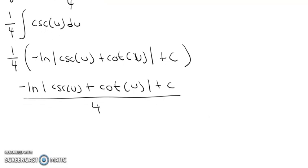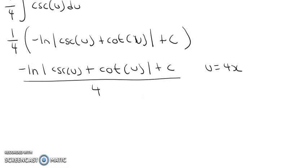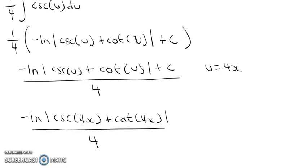And then our last thing we have to do here is substitute back for u. Like we said, u is equal to 4x. So if we go ahead and sub this back, we get negative natural log of the absolute value of cosecant 4x plus cotangent 4x, and then we're going to close the absolute value all over 4 plus c. And that would be our answer.